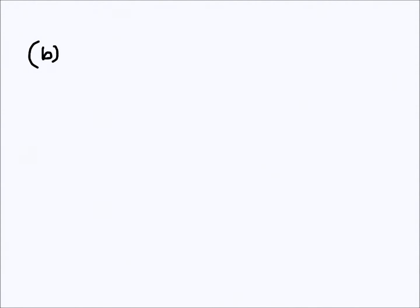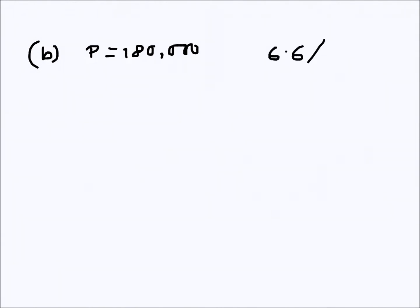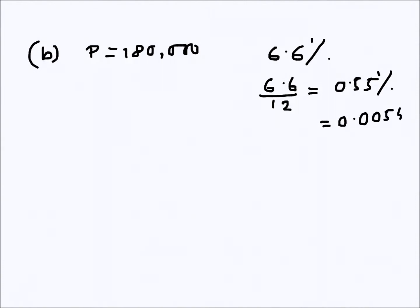P is given as 180,000. The interest rate is 6.6% per annum, but the amount is compounded monthly, so we need the monthly interest rate. We divide by 12 and get 0.55%, which as a fraction is 0.0055. So 1 + r = 1.0055.